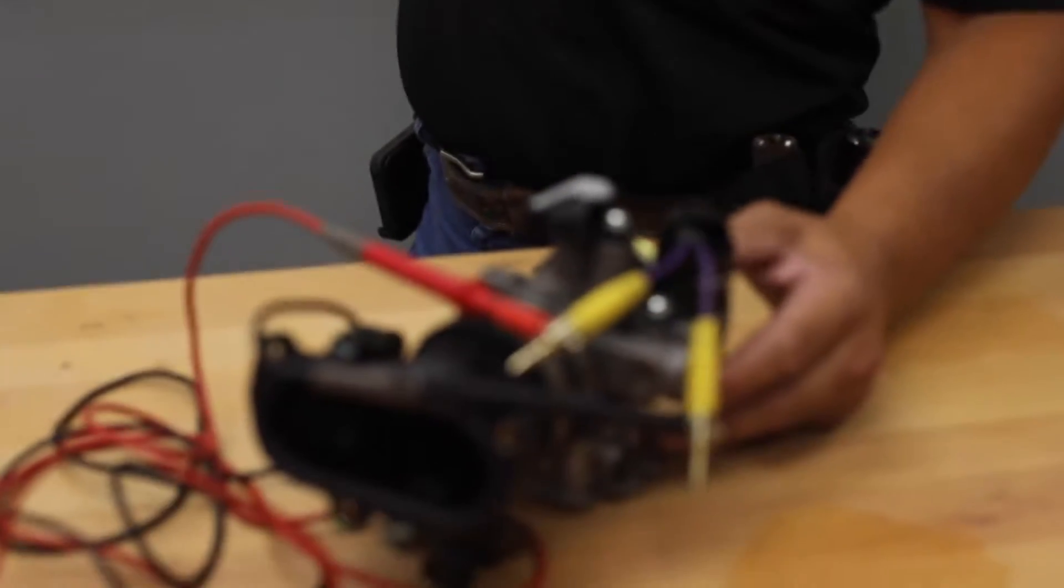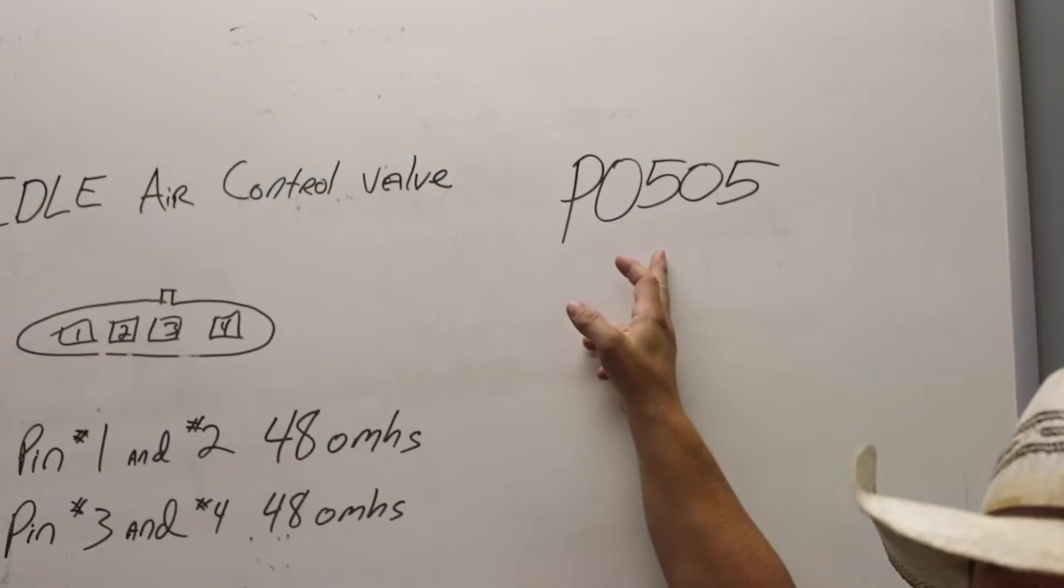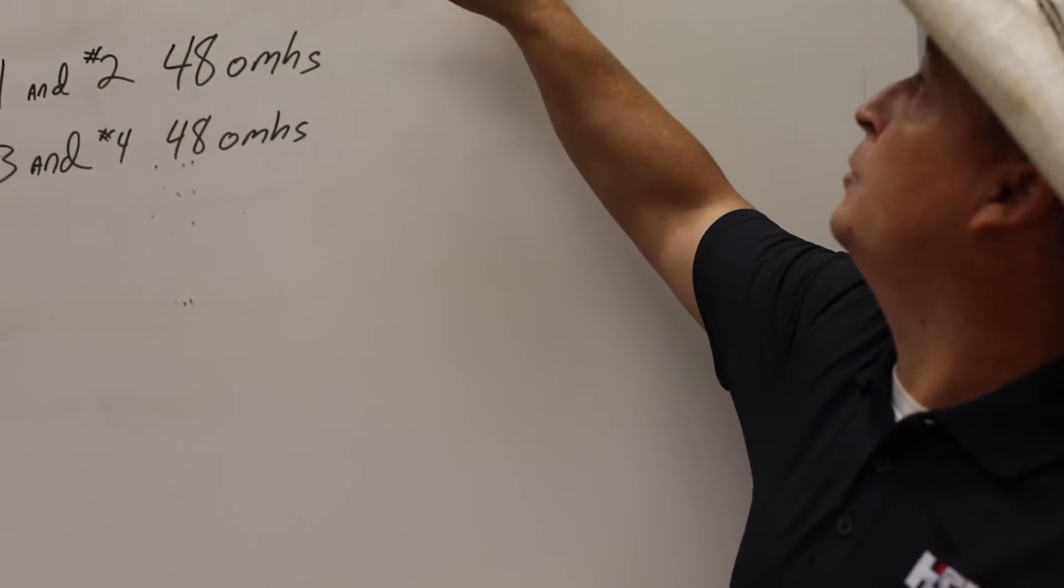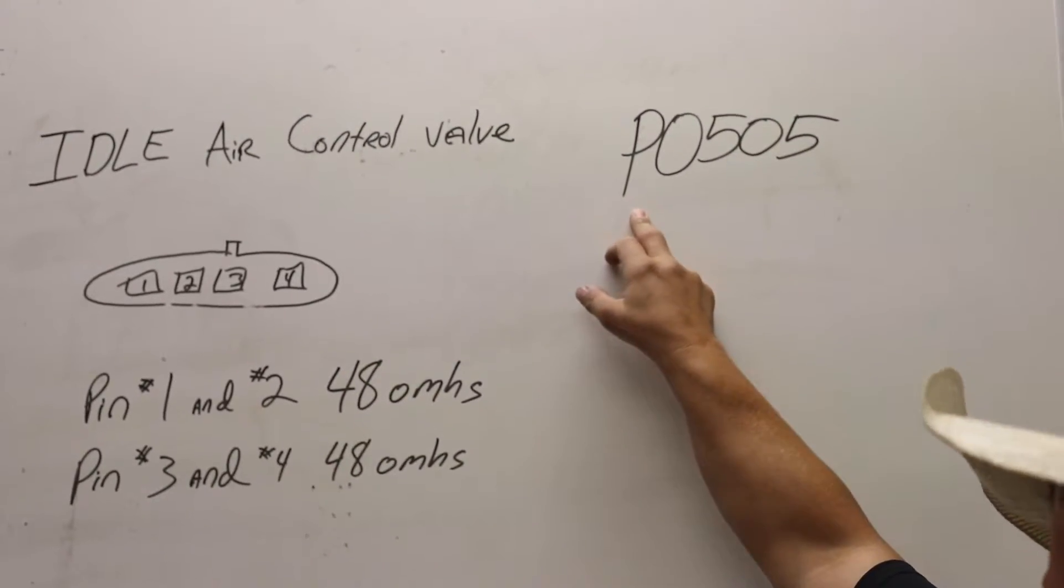This sensor is going to give you an error code of P0505. If you are doing it off the dash, this may be an E or it may not have a letter at all.